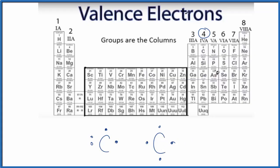In group five we have five valence electrons. Group six, six valence electrons. And then in group seven, these have seven valence electrons.